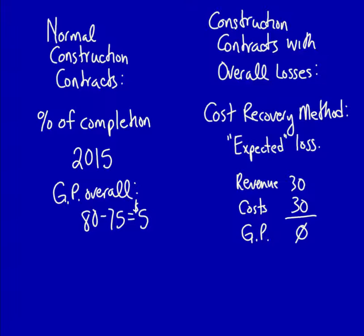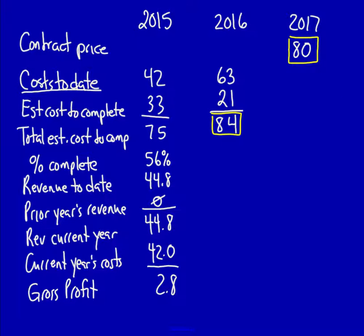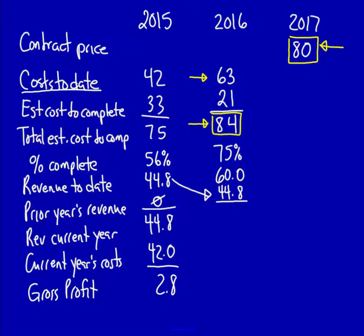Let's go back to our example and see how this impacts our calculations. First, we calculate the percentage complete: $63 divided by the total estimated cost of $84 equals 75%. That means we are estimating 75% of this project is complete. We now multiply 75% by $80 (the selling price) to figure out our year-to-date revenue: $80 × 75% = $60. To calculate revenue for the current year, we deduct the prior year's revenue of $44.80, giving us current year revenue of $15.20. Current year's costs are $21. Gross profit for the year is therefore a loss of $5.80.